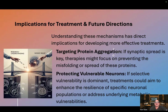Understanding these mechanisms has direct implications for developing more effective treatments. If synaptic spread is key, therapies might focus on preventing the misfolding or spread of these proteins. If selective vulnerability is dominant, treatments could aim to enhance the resilience of specific neuronal populations or address underlying metabolic vulnerabilities.